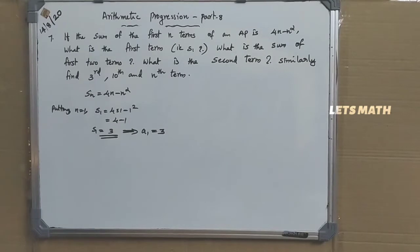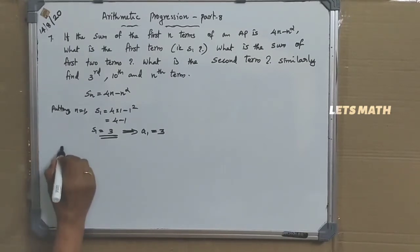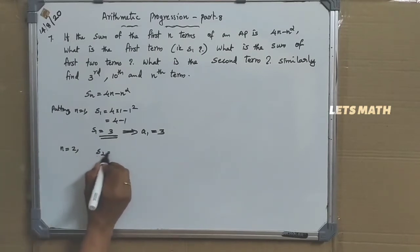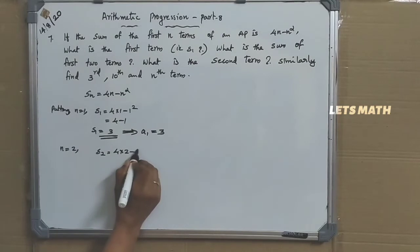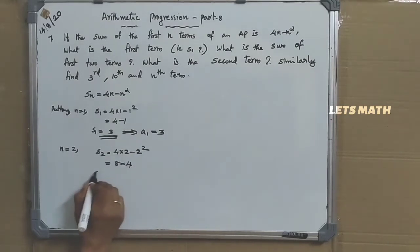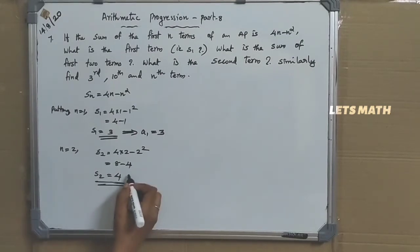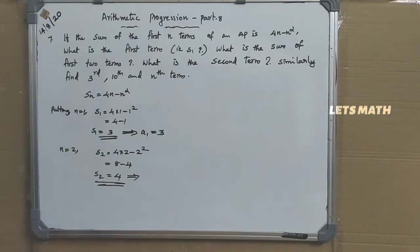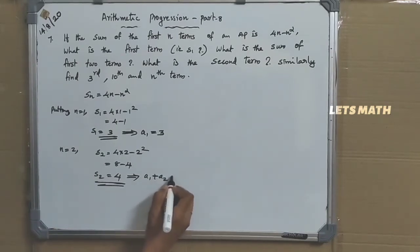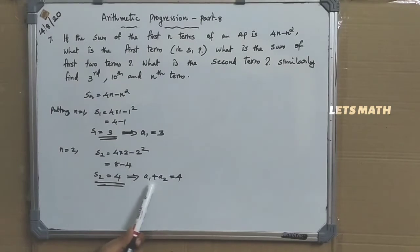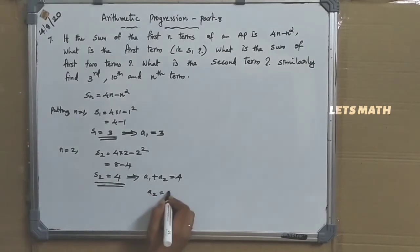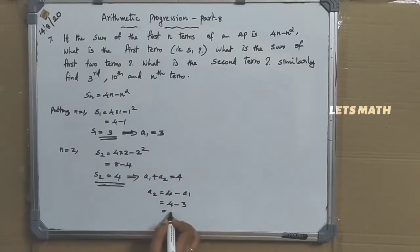For the sum of first two terms, put N equal to 2: S2 equals 4 into 2 minus 4, giving 8 minus 4, so S2 equal to 4. S2 means A1 plus A2 equal to 4. Since the first term is 3, the second term A2 equals 4 minus 3 equal to 1.